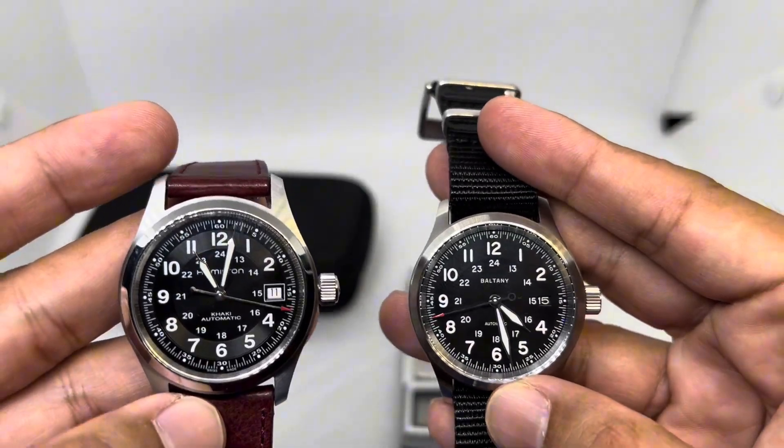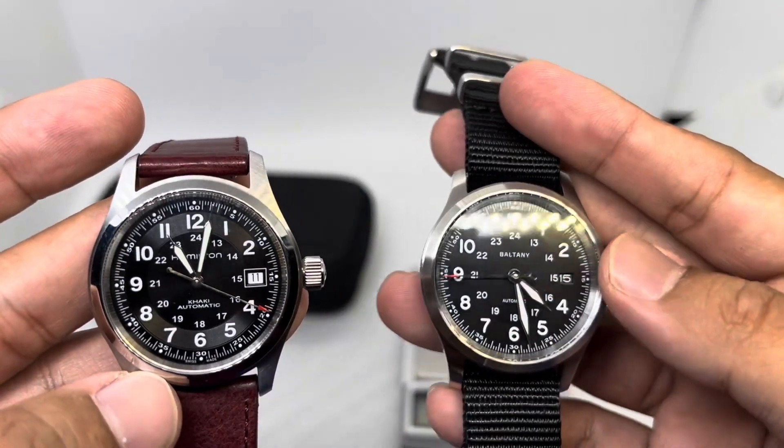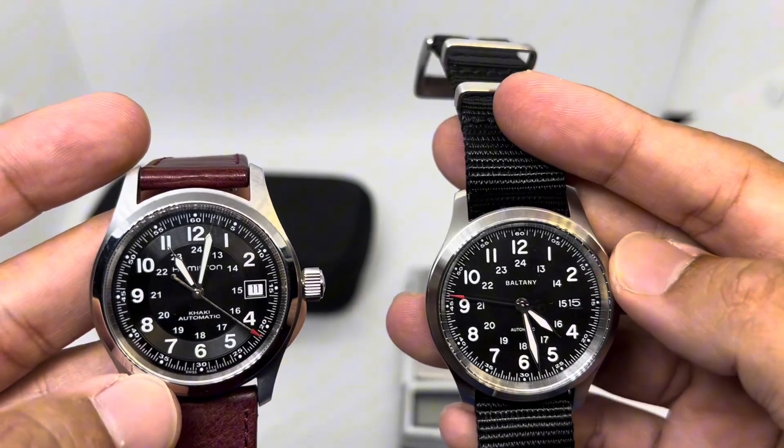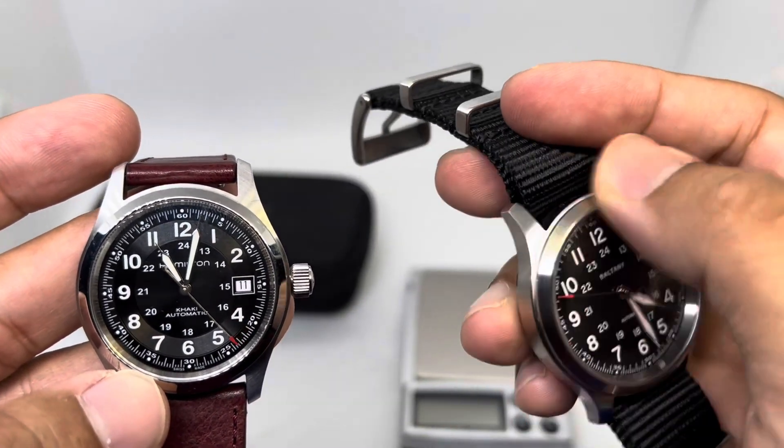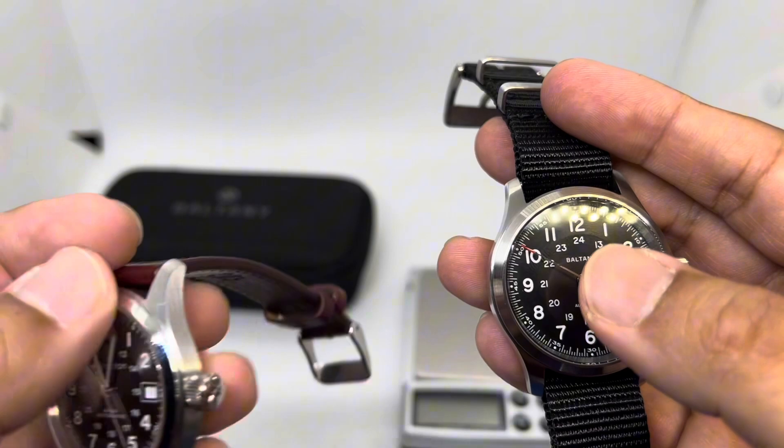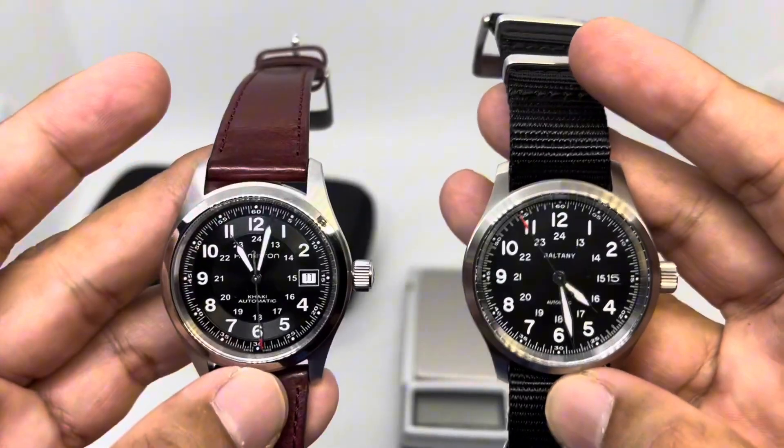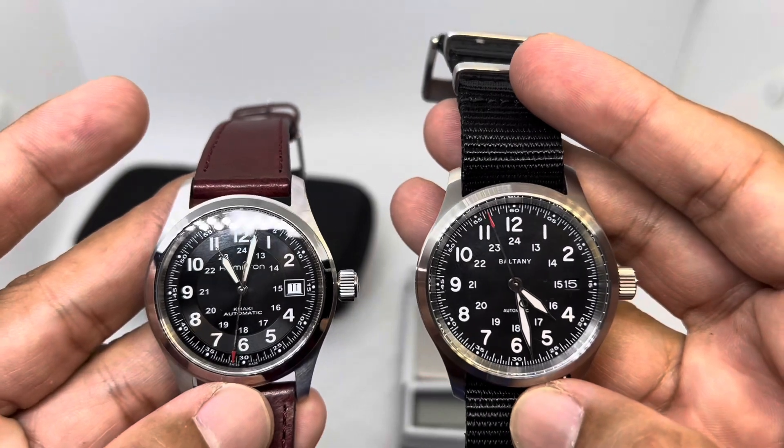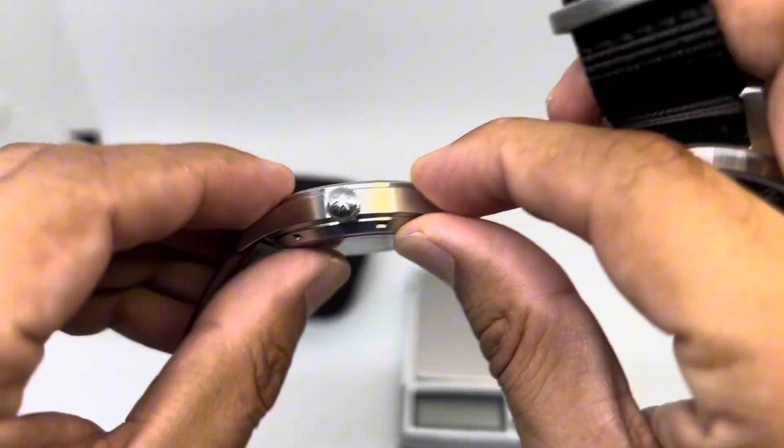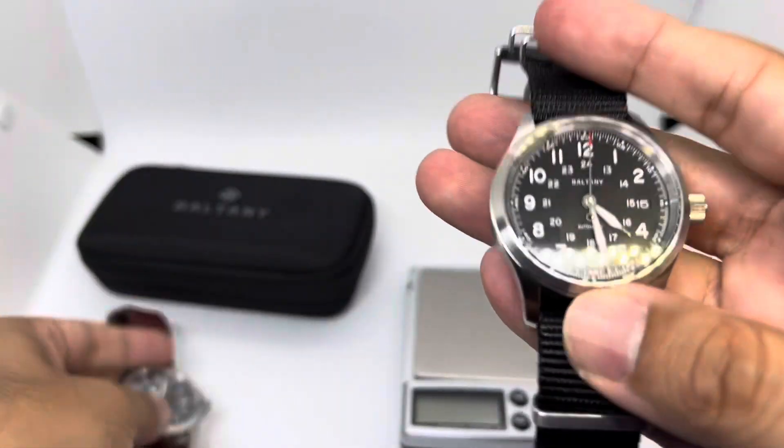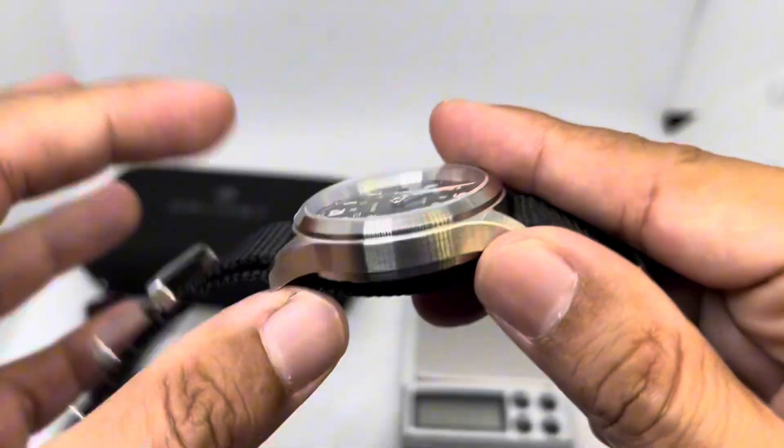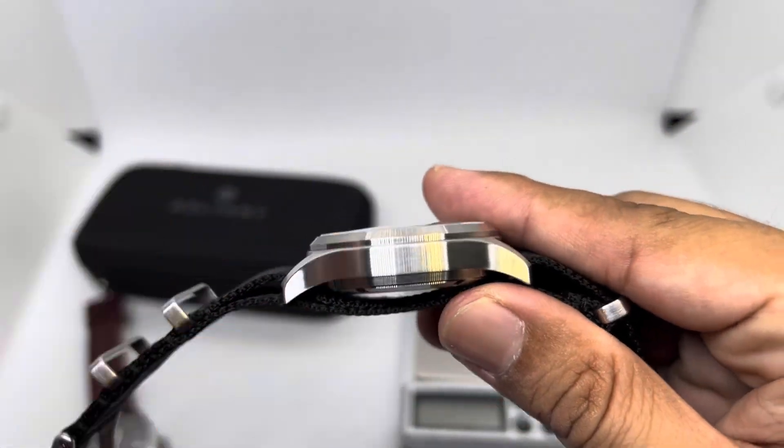First thing first, let's check out the bezel. This one has a fully brushed bezel, whilst the Hamilton has a fully polished bezel - that's number one difference. And of course the case design is different. This one has a much more curvy looking case, but this one is much simpler or more generic looking case.